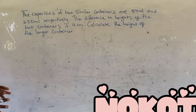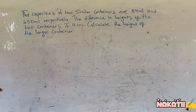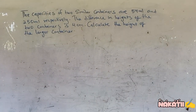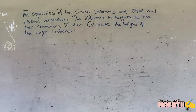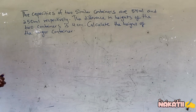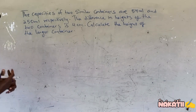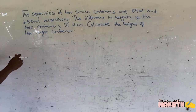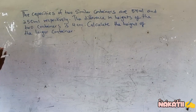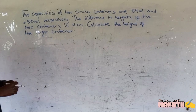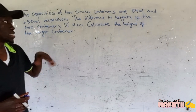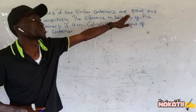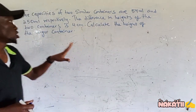The capacity of two similar containers are 54ml and 250ml respectively. The difference in heights of the two containers is 4 centimeters. Calculate the height of the larger container. This is simply the concept of linear scale factor, volume scale factor, and area scale factor. We say capacity represents volume, and I like taking the one with the smaller volume, 54ml, as the image.